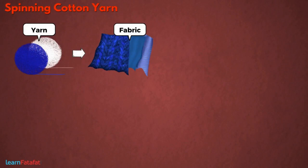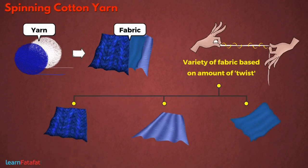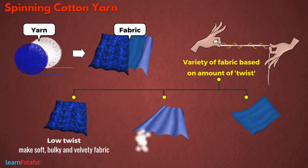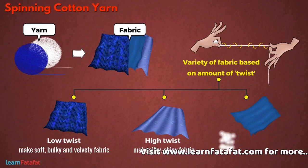Fabric is made from yarn. We get a variety of fabrics based on the amount of twist in the yarn. For example, low twist makes soft, bulky and velvety fabric, while very high twist makes silky, shiny fabric. In general, average twist is used to make the most common fabrics.